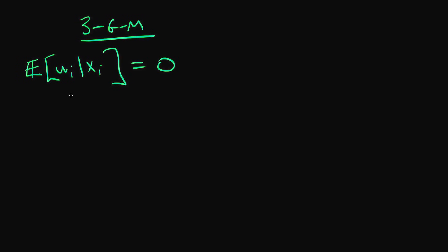Written mathematically, that means that the expectation of my error given any of my independent variables x has to be equal to zero. So what do we mean by this and what are the consequences of it?